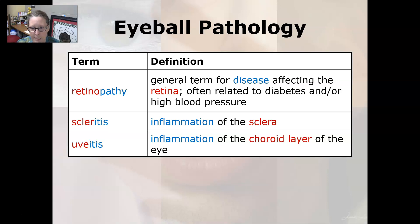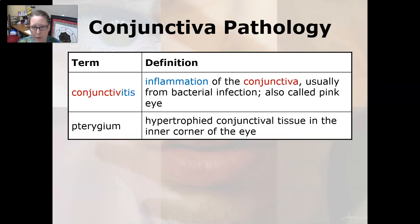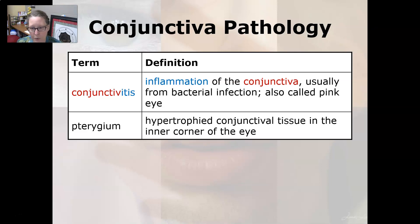Scleritis is an inflammation of the sclera and uveitis is an inflammation of the uveal layer of the eye. Moving on to conjunctiva pathology: conjunctivitis is inflammation of the conjunctiva, usually from a bacterial infection, and is also called pink eye. Pterygium is hypertrophied conjunctival tissue in the inner corner of the eye.